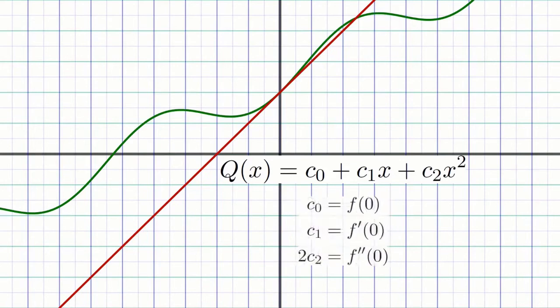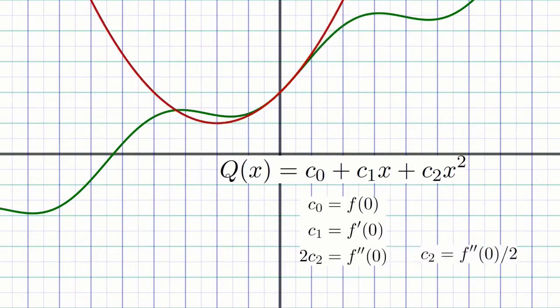Expanding these out, we get that c0 and c1 are, like before, equal to f of 0 and f prime of 0. But the third equation becomes 2 c2 equals f double prime of 0, which means c2 must equal f double prime of 0 over 2.